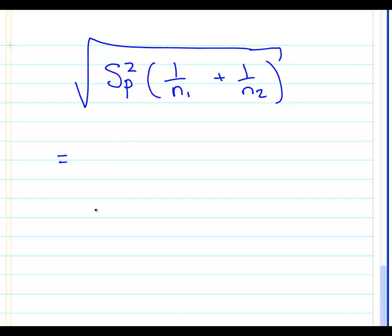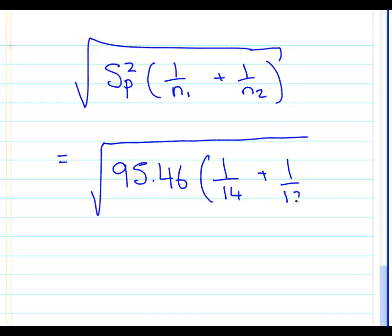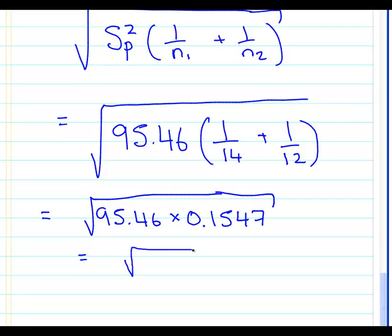So square root of sp² times (1/n1 + 1/n2). So a bit of calculator work: square root of 95.46 times (1/14 + 1/12). So a little bit of calculator work. I'm going to pause it and just do that. That is equal to square root of 95.46 times 0.1547. And the way I have it done out on my calculator, I might not get the exact same answer. I get the square root of 14.773, so we're close enough. Now 14.773, get the square root of that, is 3.84.